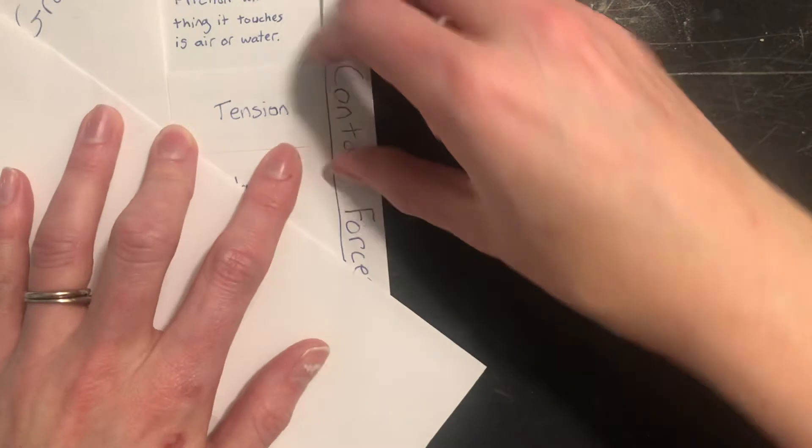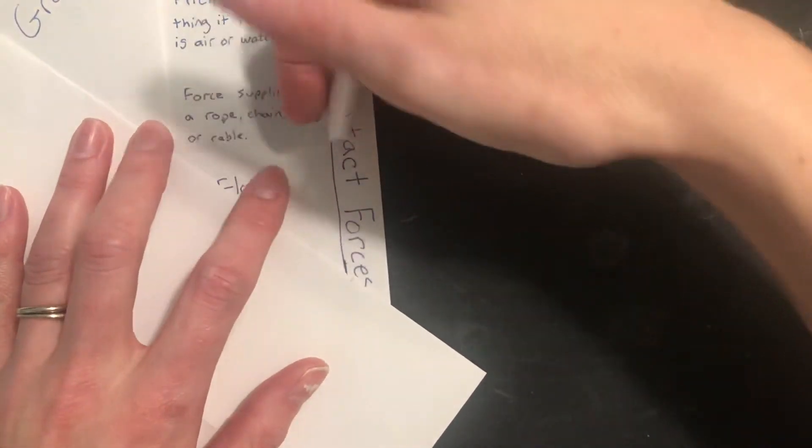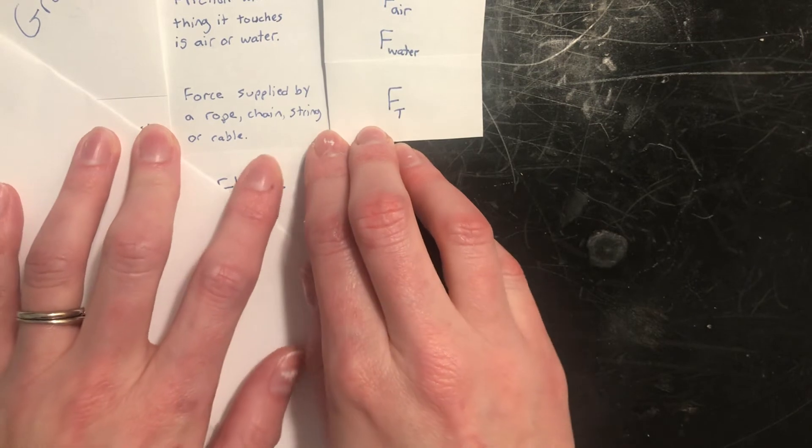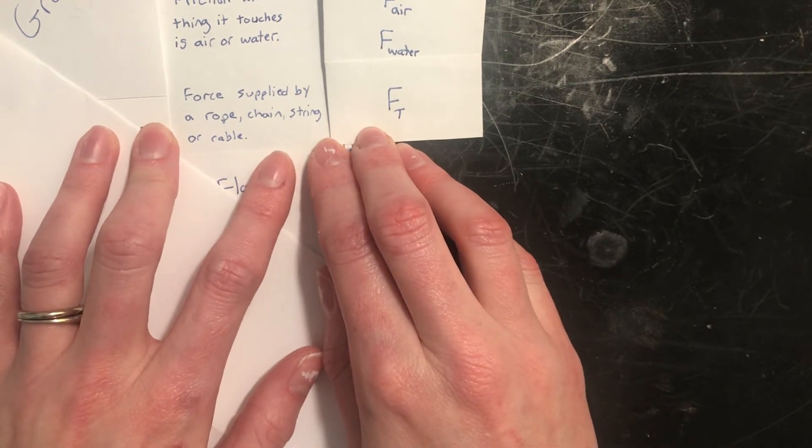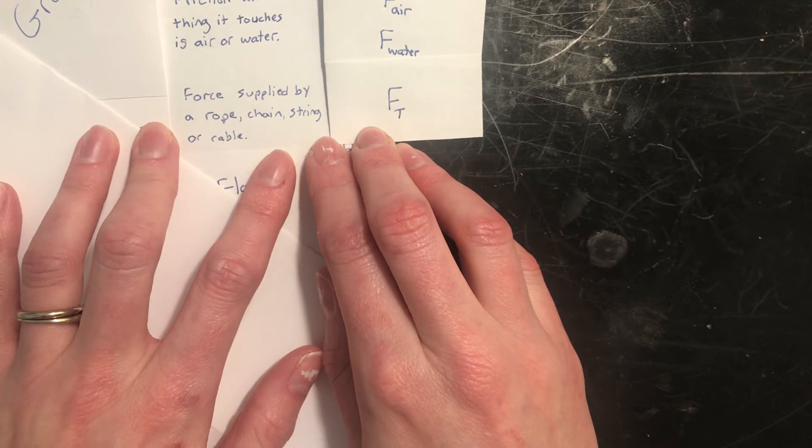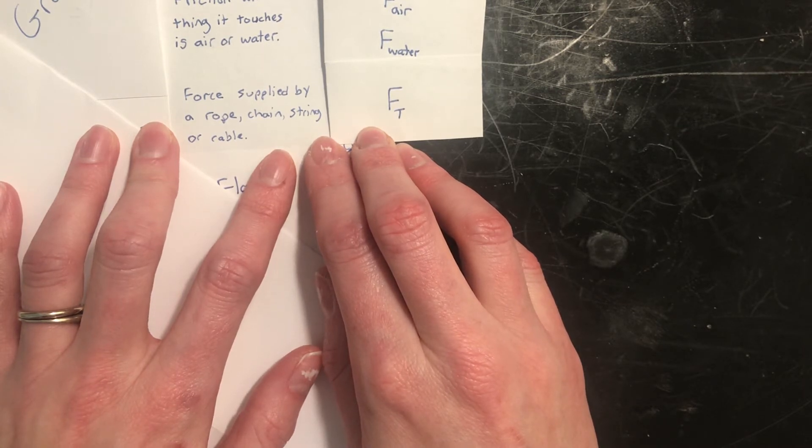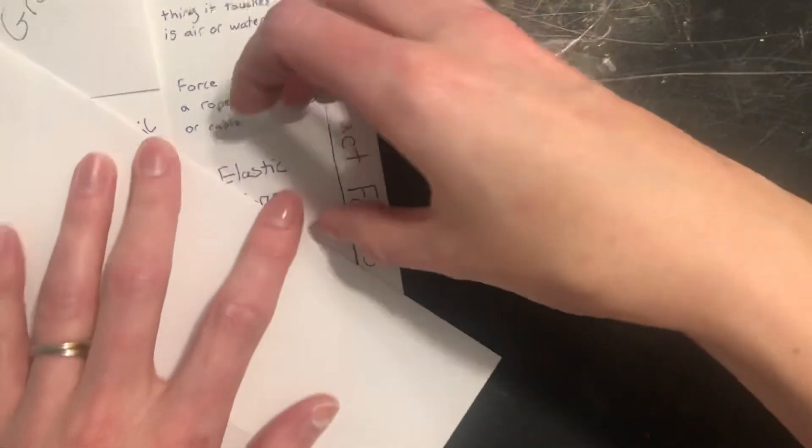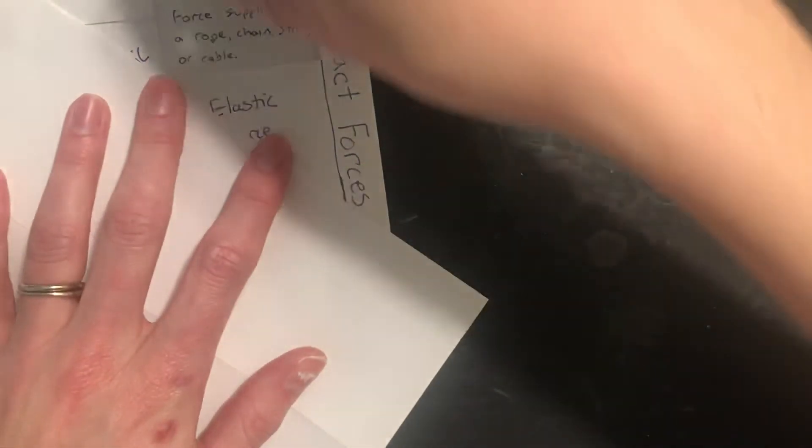The next one is called tension. Tension is what we call it if a force is supplied by a rope, a chain, a string or a cable. So if you are thinking about something that is hanging by a string, the thing that is holding you up, holding it up is called tension. Tension is what we call that. If the thing that is holding it up, the rope, the chain, the string, the cable, if it is at all stretchy, maybe it's a spring.